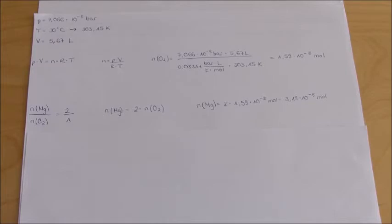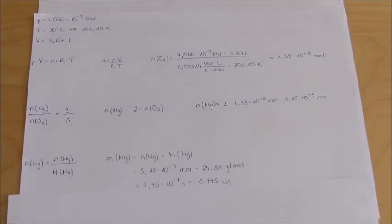The formula is n(Mg) equals the mass of magnesium divided by the molar mass of magnesium.